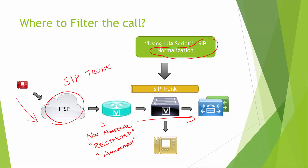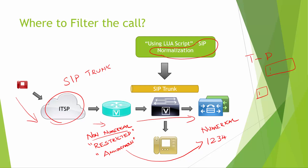That's the whole reason we use the SIP normalization script — it converts these non-numerical strings into a numerical value. For example, if we see 'restricted', 'anonymous', or 'unknown', we convert those into a numerical number like 1234. We then send this call to a translation pattern by playing with CSS and partitions.